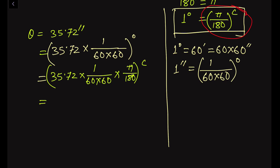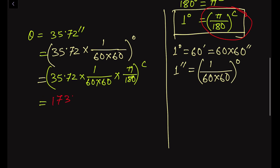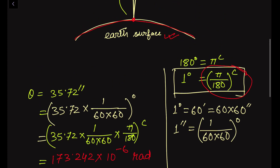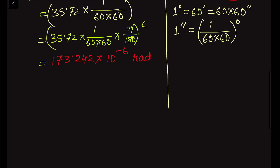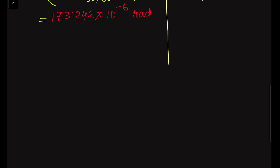After simplification, we get theta equal to 173.242 × 10⁻⁶ radians. So we have expressed the parallax angle in radian units: theta equals 173.242 × 10⁻⁶ radians.